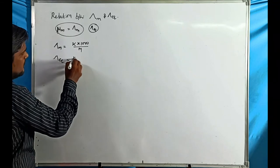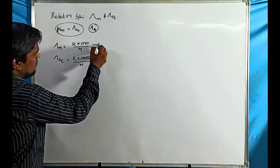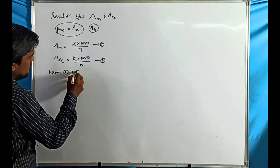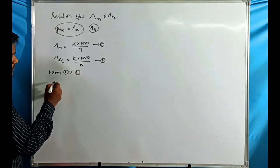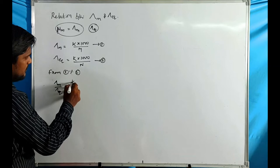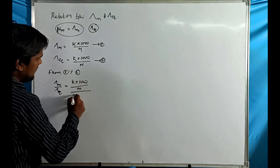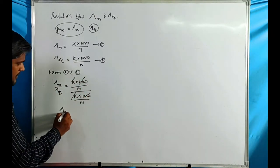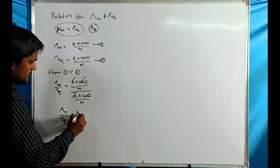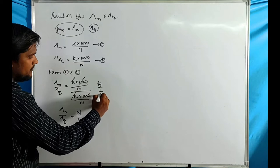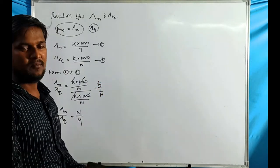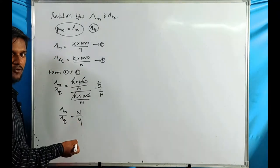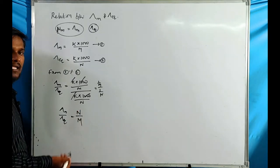Lambda equivalent is equal to kappa times 1000 divided by normality. Dividing equation 1 by equation 2, lambda m divided by lambda equivalent equals (kappa × 1000 / M) divided by (kappa × 1000 / N). Kappa cancels, 1000 cancels, giving lambda m / lambda equivalent = N / M.